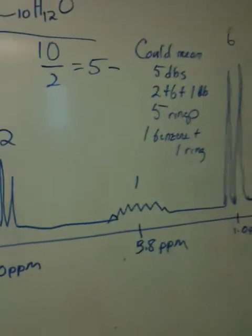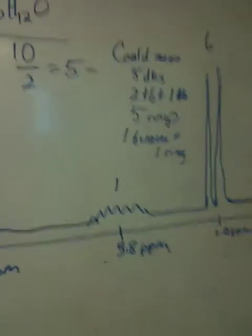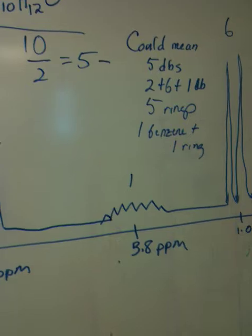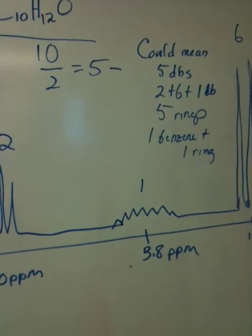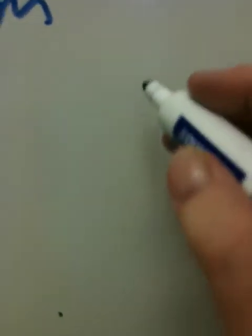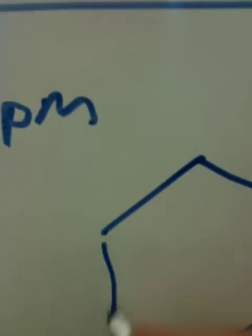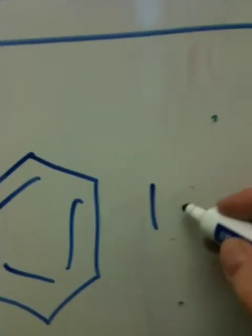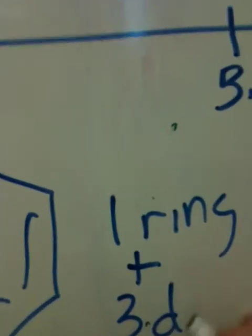We're going to figure it out by looking at the spectrum. Remember what we said in class: a very high unsaturation — an unsaturation above 4 — could indicate a benzene ring. We said in class that benzene is 1 ring plus 3 double bonds.